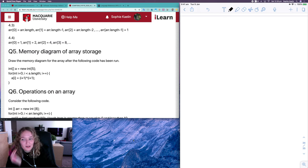Hi everyone, I'm going to look at question 5 from the Compound Data 1 workshop. So this question here asks you to draw a memory diagram for the array after the code is run.